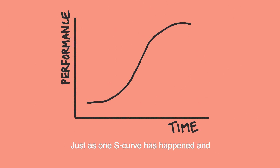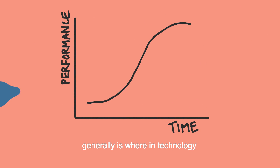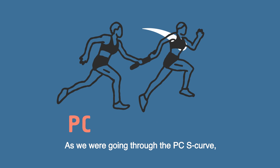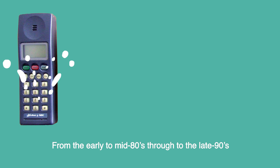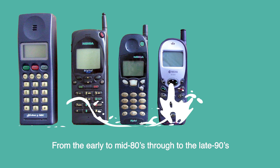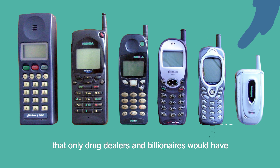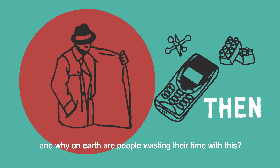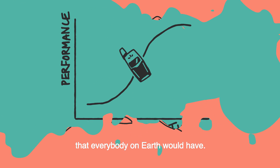Just as one S-curve has played out and starts slowing down, generally in technology you get another one. As we were going through the PC S-curve we were also going through an S-curve with mobile phones. From the early to mid 80s through to the late 90s, mobile phones went from a crazy idea that only drug dealers and billionaires would have — a stupid toy — to something that everybody on earth would have.